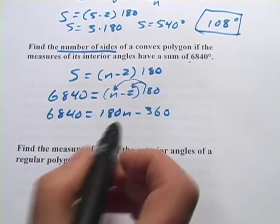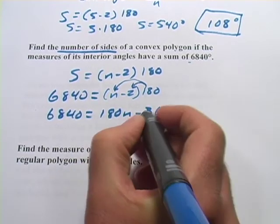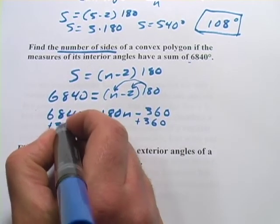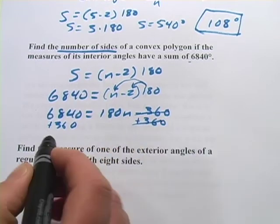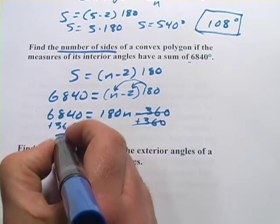Now, to solve for n, I want to get the variable alone on one side, so I want to get rid of this negative 360. I'm going to get rid of it by doing the opposite. I'm going to add 360. Got to do that to both sides. Over here, the 360s will disappear, and over here, I get 6840 plus 360, which is 7200.